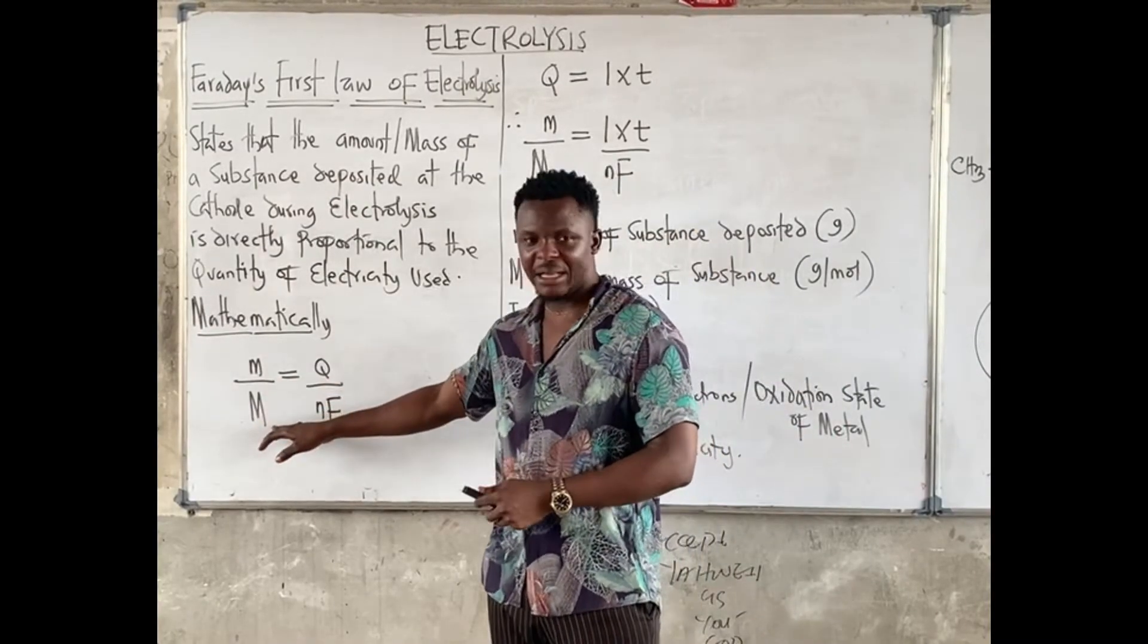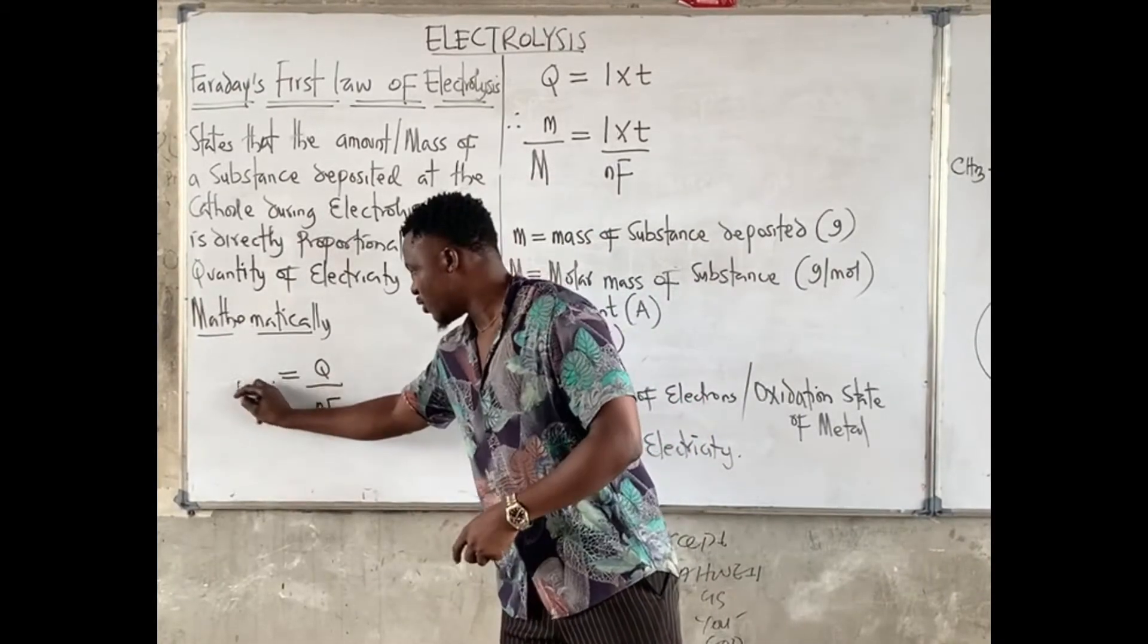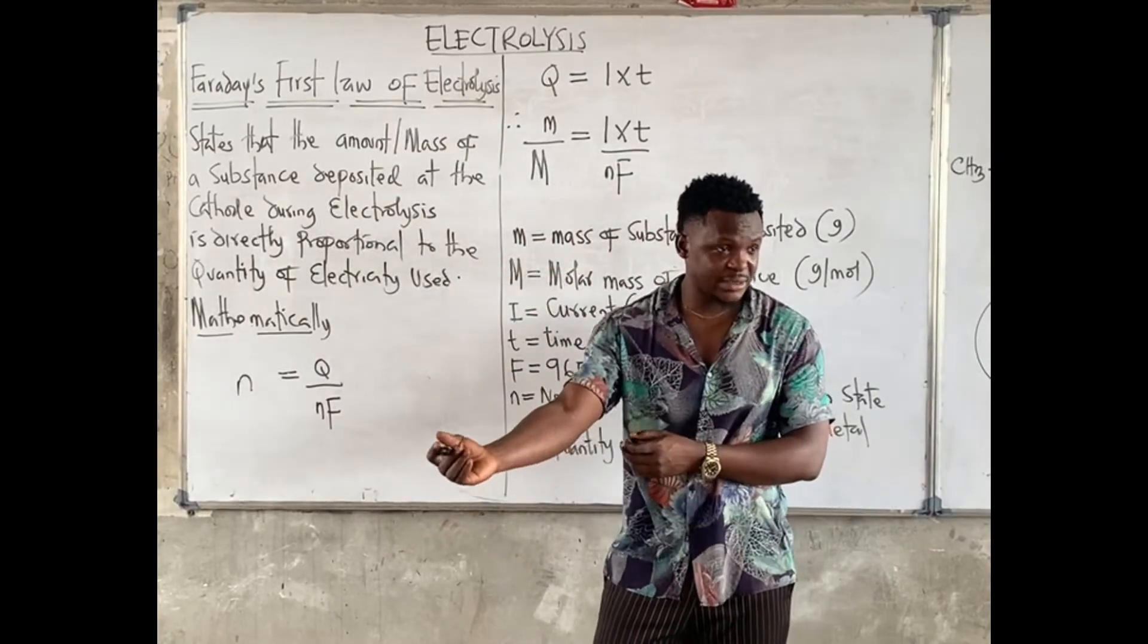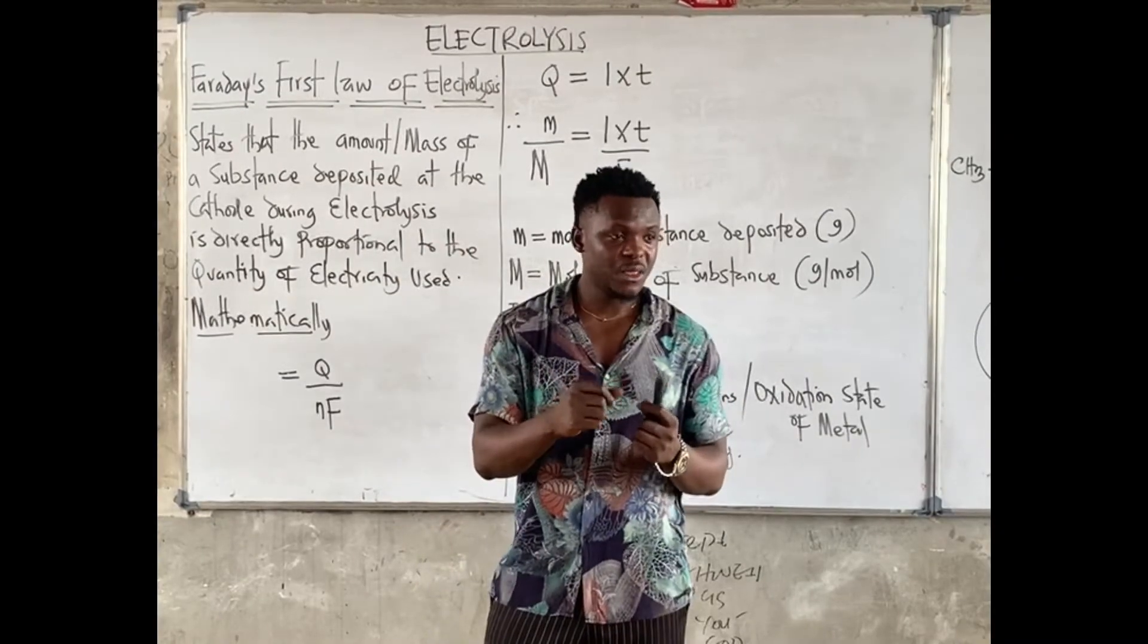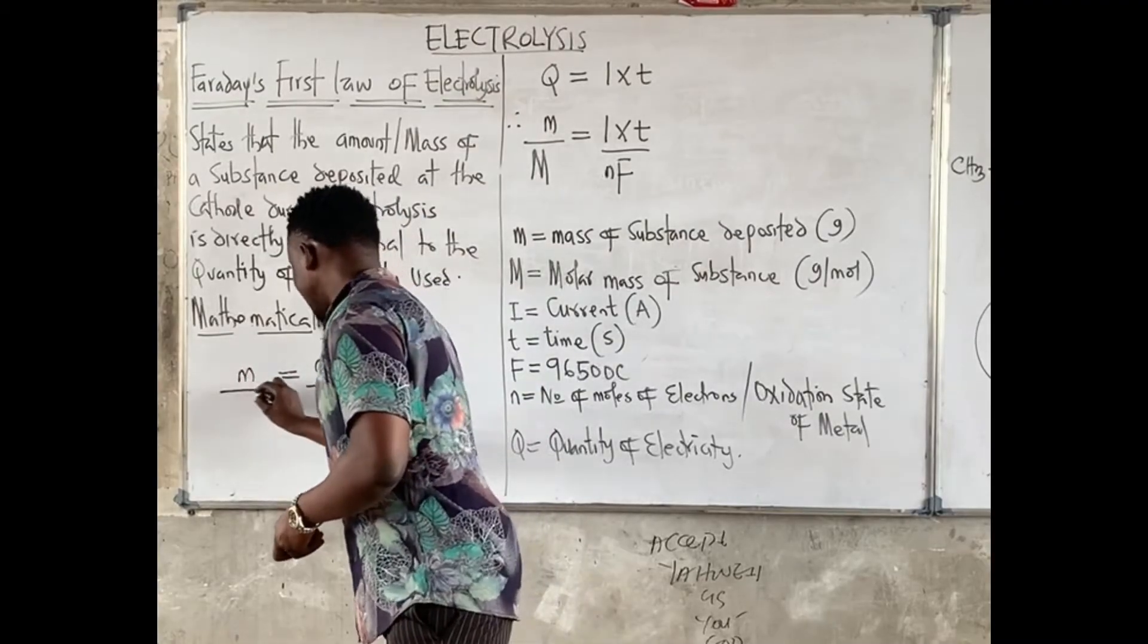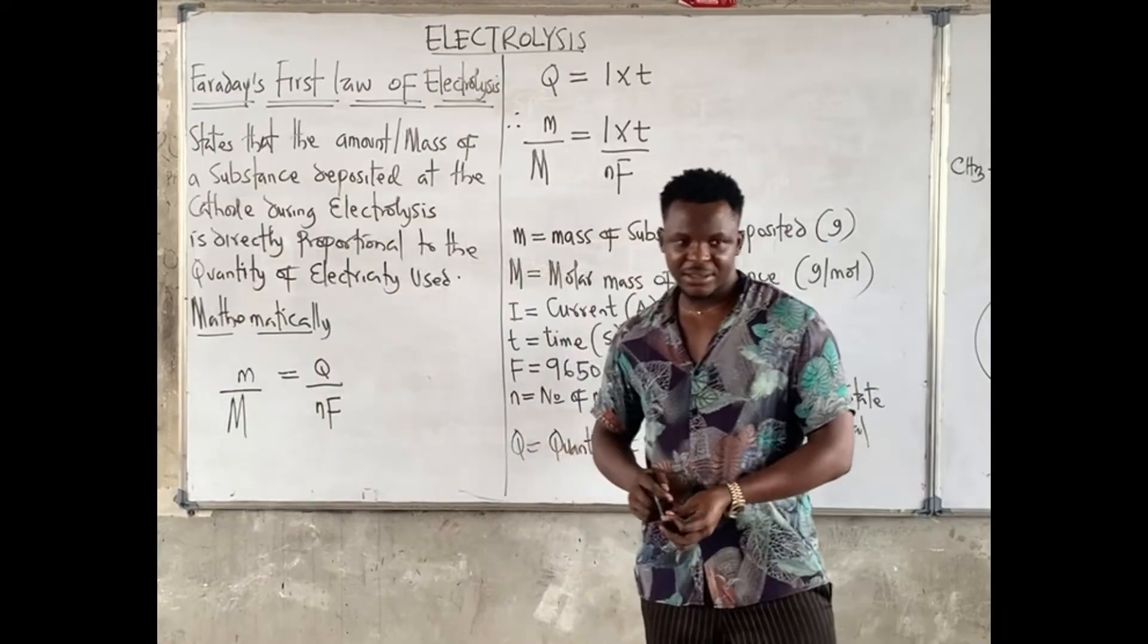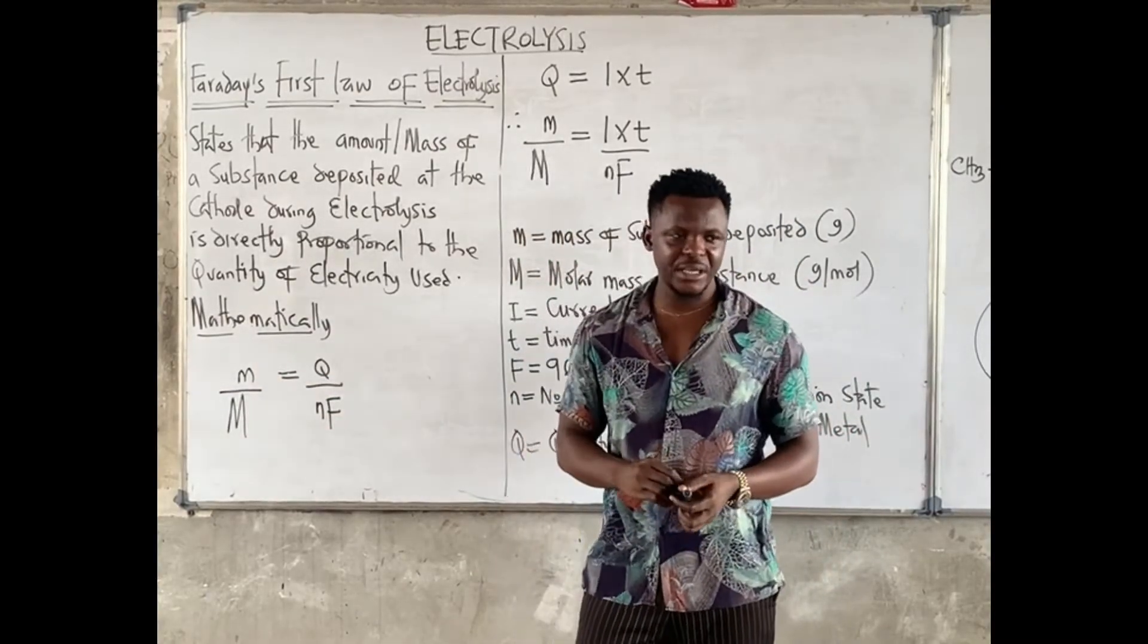Now this is mass followed by molar mass. This mass over molar mass can also be replaced by n number of moles, because mass over molar mass is in moles. But since we hardly come across moles in electrolysis equations, it's always mass. Small letter m is mass and capital letter M is molar mass. So this formula is used to carry out calculations pertaining to the first law: mass over molar mass.